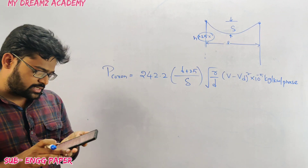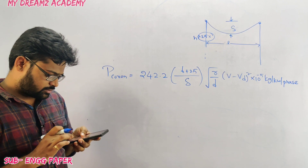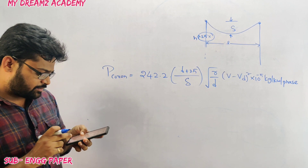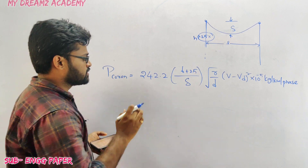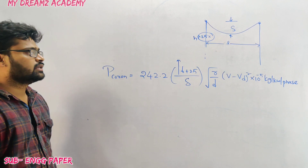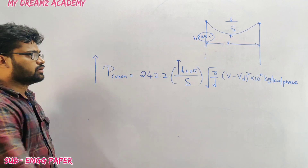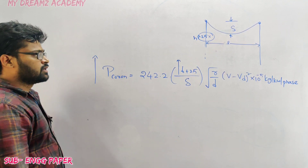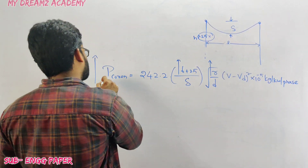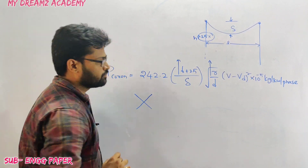Corona loss increases with decrease in conductor size and increase in frequency. If frequency increases, corona loss increases. If the radius of the conductor increases, it might seem corona increases since the formula has r directly, but this is a wrong perception.